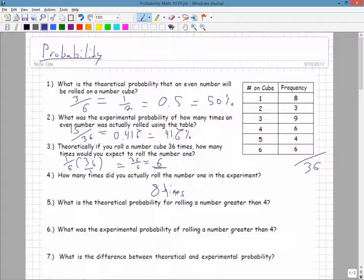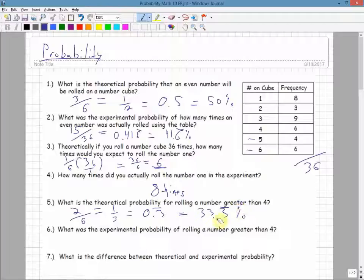What is the theoretical probability for rolling a number greater than 4? Well, numbers that are greater than 4 are 5 and 6. So theoretical, I'm not taking into account the chart. I would say 2 out of those 6 numbers would occur. So 2 out of 6 is equivalent to 1 out of 3, which is equivalent to 0.3 repeating, or 33 and a third repeating percent.